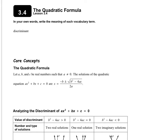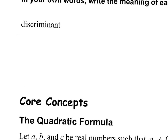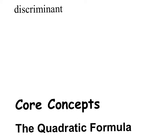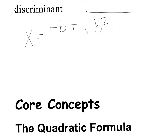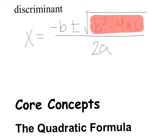A couple things we're going to talk about here. We're going to talk about the term discriminant. If you're doing this for the second time, that word should seem familiar. The discriminant is what is under the radical in the quadratic formula. The quadratic formula is x equals the opposite of b, plus or minus the square root of b squared minus 4ac, all over 2a. The discriminant is just the value of b squared minus 4ac.